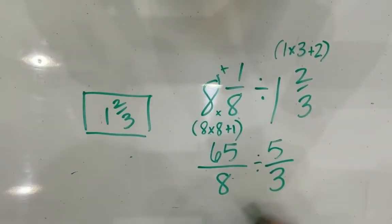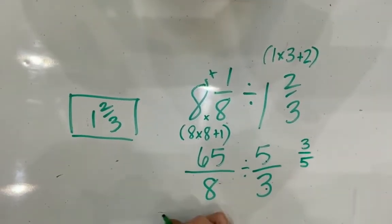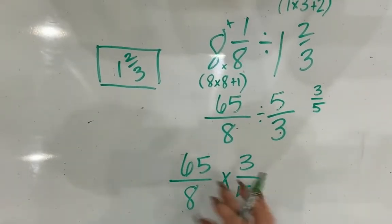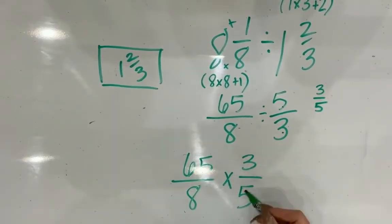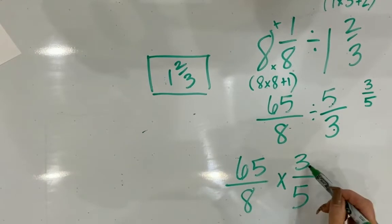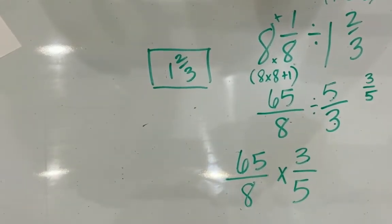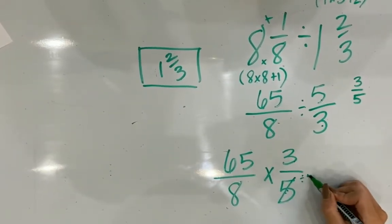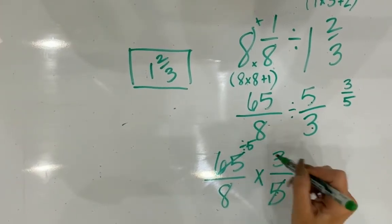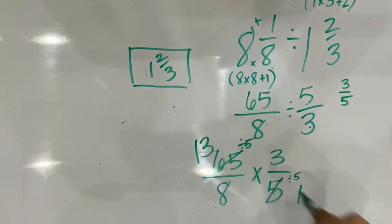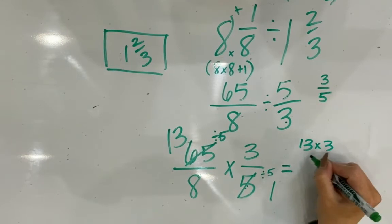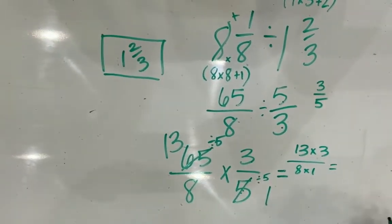When dividing fractions, I need to multiply by the reciprocal. For the divisor: one times three plus two gives me five-thirds, and the reciprocal of five-thirds is three-fifths. So I have 65 over 8 times three-fifths. I can simplify across: 5 and 65 share a factor of 5, so 5 divided by 5 is 1, and 65 divided by 5 is 13. Now I have 13 times 3 over 8 times 1, which is 39 over 8.